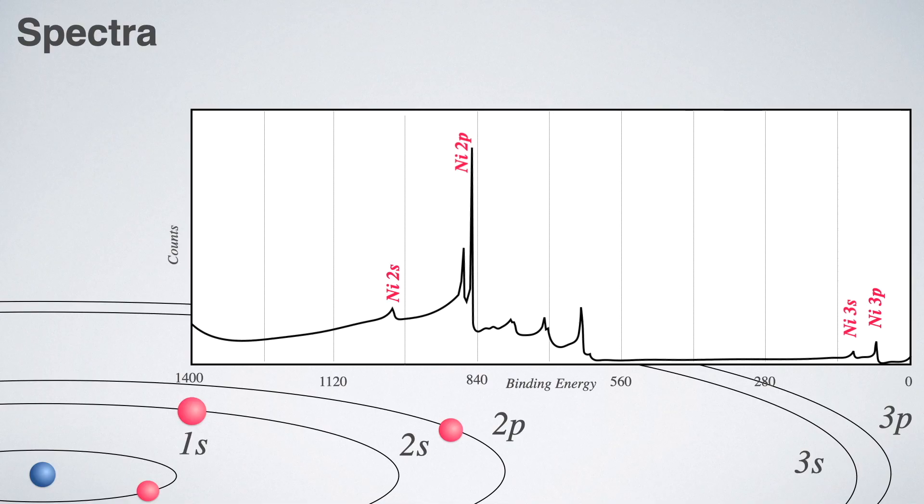Another interesting application of XPS is we can make the energy level diagram of any element and find the position of electron in the orbital. Making of an energy level diagram is a tricky task which we will discuss in upcoming videos. For now, let's stick to the number of signals and peak positions.